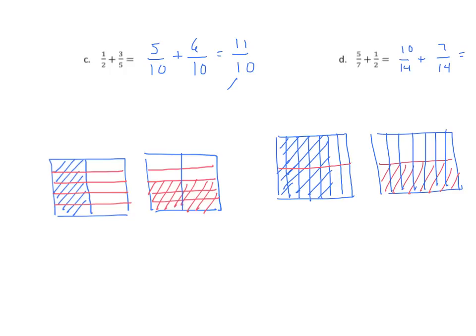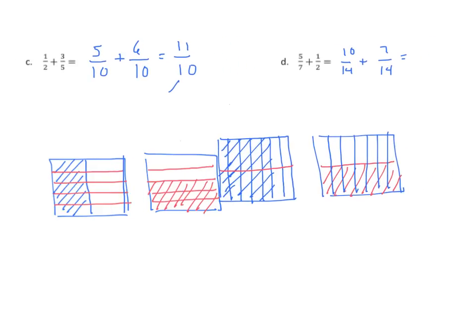We'll find the sum. We have 17 14ths. We'll again decompose that. We have 14 14ths plus 3 14ths equals one plus 3 14ths equals one and 3 14ths.